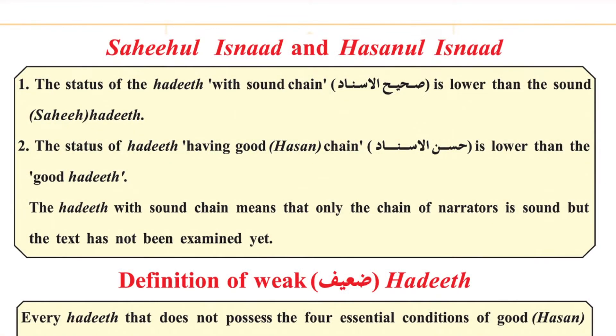Similarly, the term Hassan al-Isnad is used. Hassan al-Isnad is lower in degree than a Hassan Hadith. The scholar is saying: the chain is continuous and unbroken — Muttasil Sanad — and the narrators are Adil, but some have weak memory. He is not making any statement about the last two conditions of Illat and Shahz.